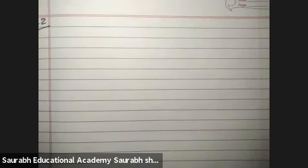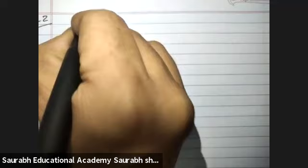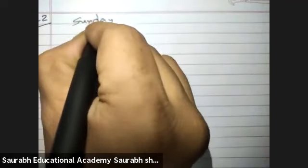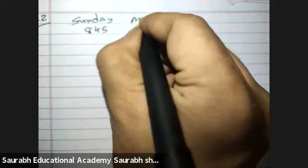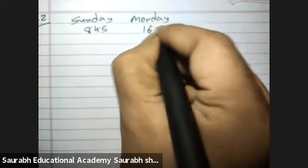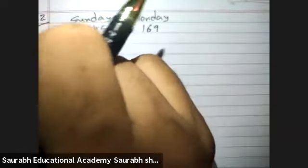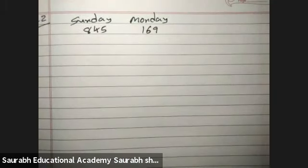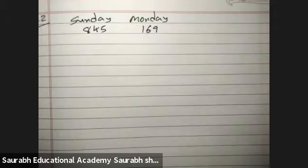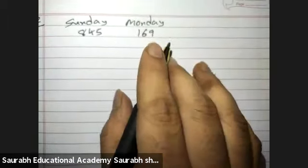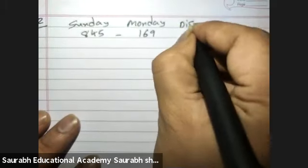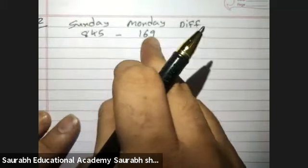Sum number 2: On Sunday, 845 people went to the zoo. On Monday, only 169 people went. What is the percent decrease in people visiting the zoo on Monday? To find this, we first find the decrease: 845 minus 169.